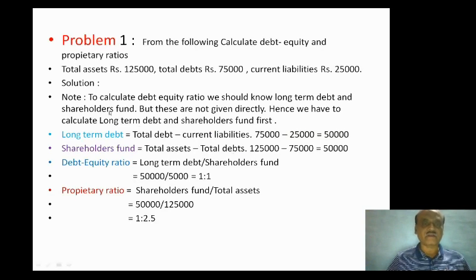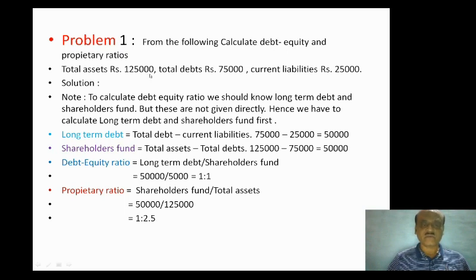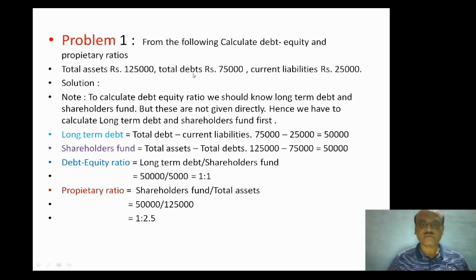Problem: Debt equity ratio and proprietary ratio. From the following, calculate debt equity and proprietary ratio. Total assets of the firm is $1,25,000; total debt is $75,000; current liability is $25,000. Current liabilities are to be ignored in the debt equity ratio calculation, which uses long-term debts and shareholders fund. Shareholders fund is calculated as total assets minus total debts minus current liabilities.